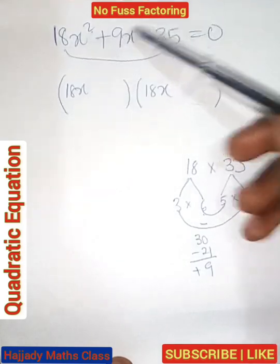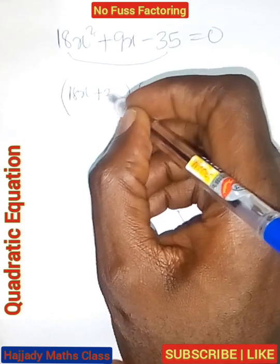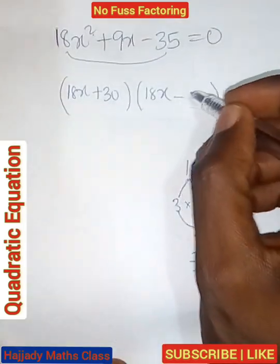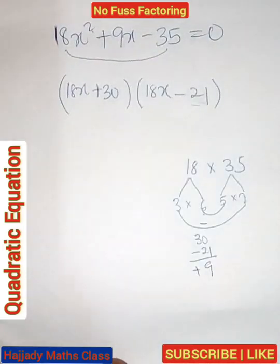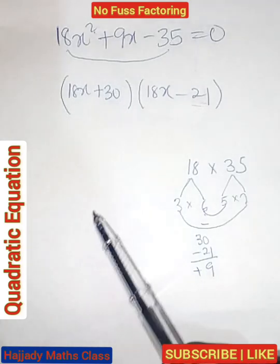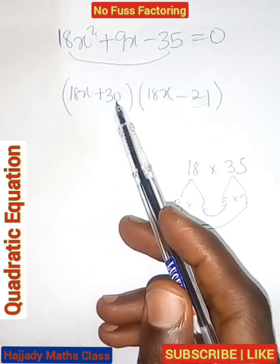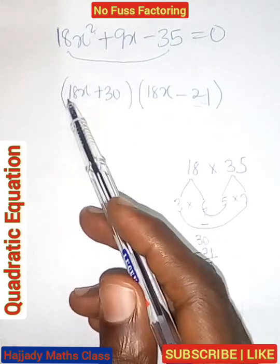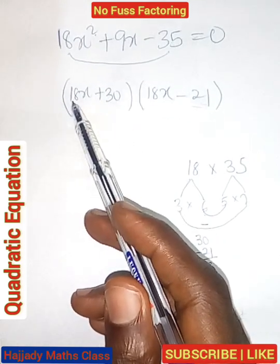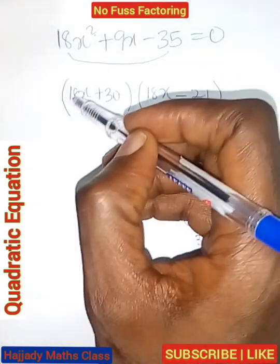So in this case now, we have plus 30 minus 21. Now the next thing we are going to do is that we are going to look for the highest common factor that can possibly divide 18 and 30. And the HCF is 6.